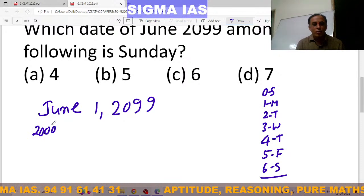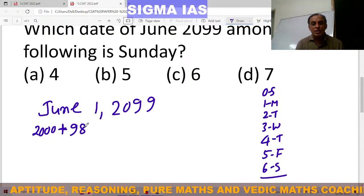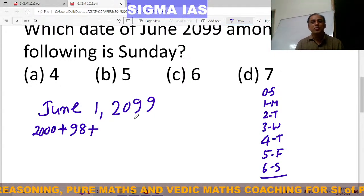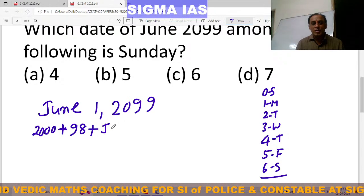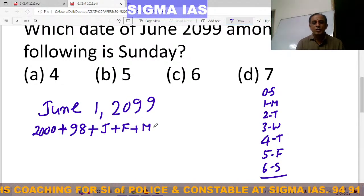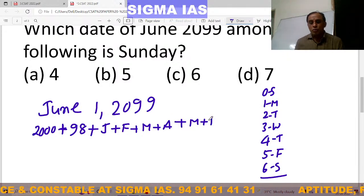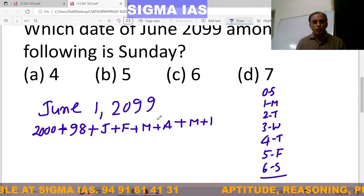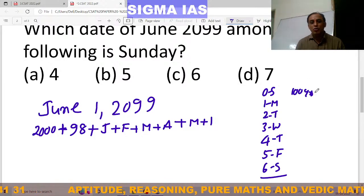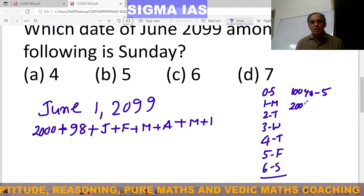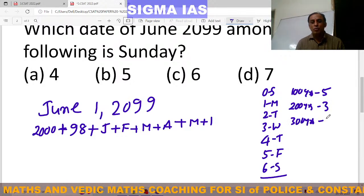To find the number of odd days: if the number of odd days up to a given date is 0, that is Sunday; 1 is Monday; 2 is Tuesday; 3 is Wednesday; 4 is Thursday; 5 is Friday; and 6 is Saturday. Now, 100 years equals 5 odd days; 200 years equals 3 odd days; 300 years equals 1 odd day; 400 years equals 0 odd days.